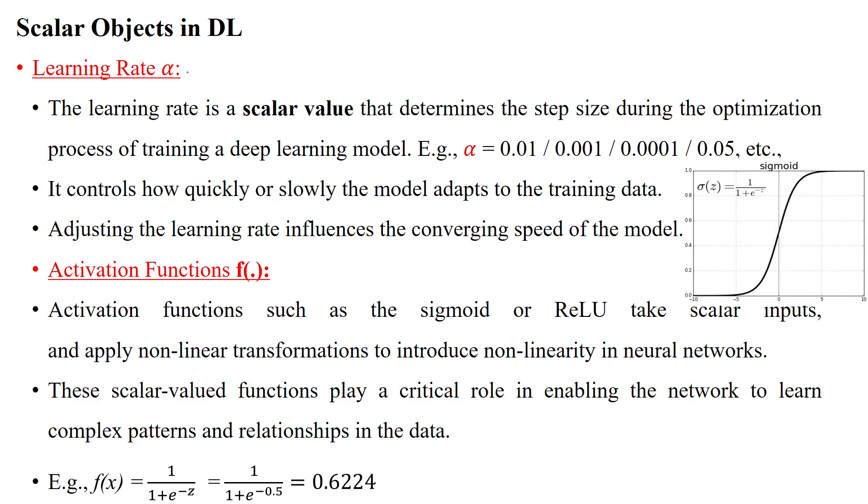Another term in scalar objects is learning rate, represented by the notation alpha, which determines the step size during the optimization process of training in deep learning models. Mostly we use alpha values of 0.01, 0.001, 0.0001, or 0.05. We typically use alpha values between 0 and 1.